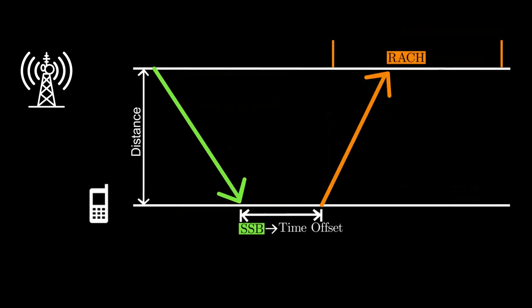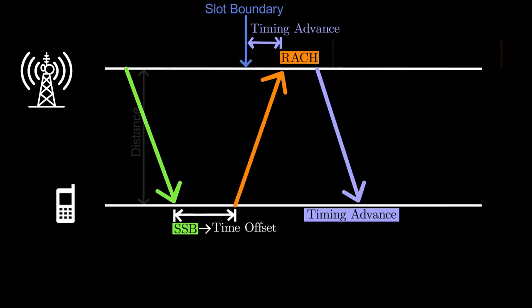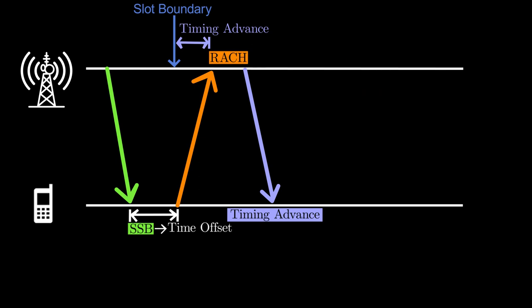Base station wants to receive all uplink signals from all UEs from the beginning of a time slot. Assume that this blue arrow is the slot boundary. Therefore, base station asks UE to prepone its transmission by sending the timing advance command. UE reads the timing advance command, adjusts the timing of all its future transmissions accordingly, and acknowledges it to base station by sending an RRC connection request.